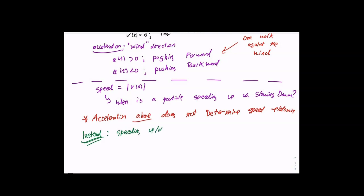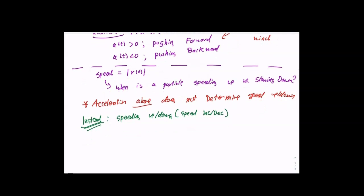Speeding up or slowing down — we might also say speed increasing or decreasing — is a combination of velocity and acceleration. When you hear 'change of speed,' you should be thinking both velocity and acceleration. When we talk about moving forward or backwards, you should be thinking of the velocity sign — whether velocity is positive or negative.